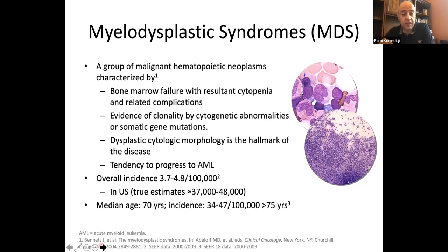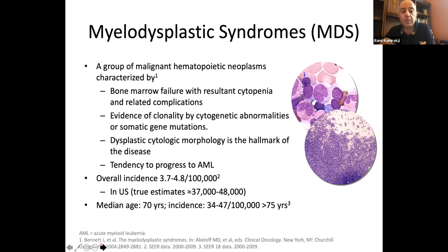There are roughly 40,000 cases per year, with an average age of 70, but we definitely see younger patients as well. In most cases, we really cannot pinpoint what caused the disease — I always tell my patients it's nothing wrong they did. It's rarely inherited. There are certain things associated with MDS, such as prior chemotherapy, exposure to benzene, or radiation, but in most cases we don't know what causes it.